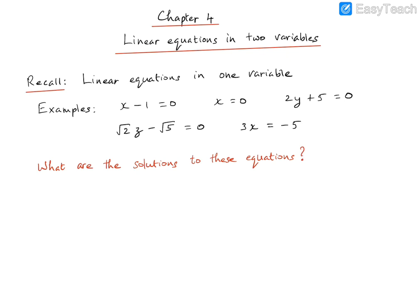We also want to understand: for linear equations in one variable, how many solutions are there? Does it have only one unique solution or can it have multiple solutions? What is the value of X that will satisfy X minus 1 equals 0? Clearly, if we put X equal to 1, then 1 minus 1 equals 0, which satisfies the equation. To solve it, we keep the variable on one side and move all the numbers to the other side. Moving minus 1 to the other side gives plus 1, so X equals 0 plus 1, which is X equals 1.